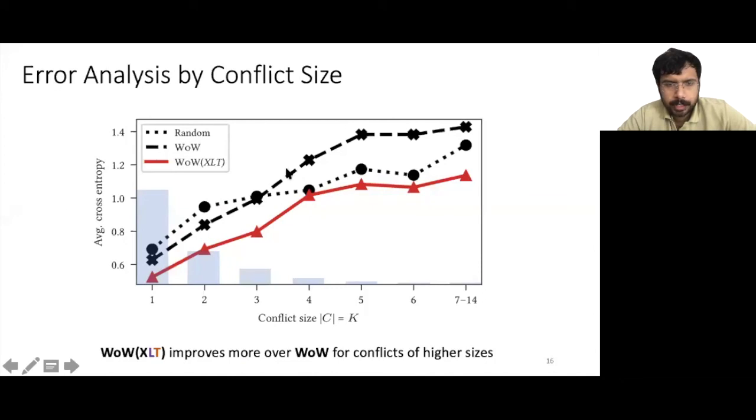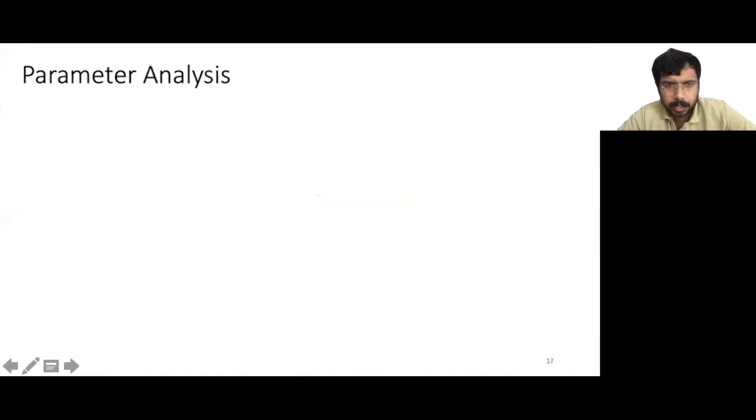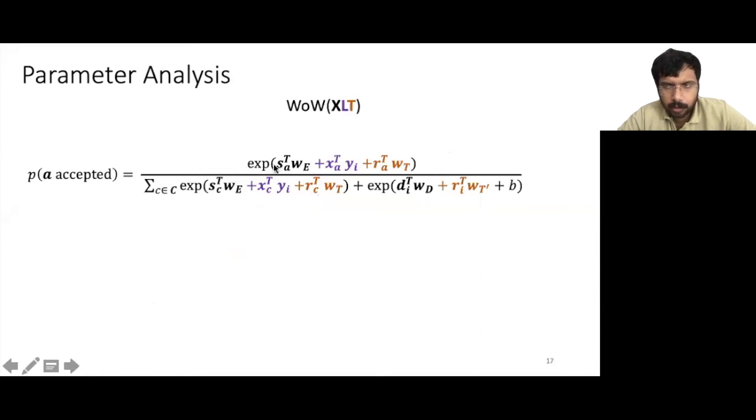Once we have trained a model, we can try to interpret its parameters. This is the expression for the full BAU XLT model, which contains three sets of parameters corresponding to the explicit, latent, and text features. First we can try to interpret the explicit features. For this, we just need to look at the coordinates of these two parameter vectors, wE and wD, to get the importance score for each feature.